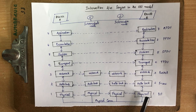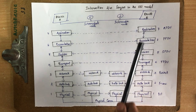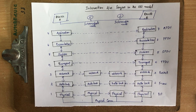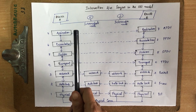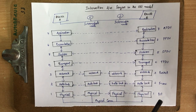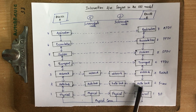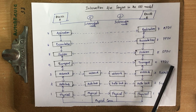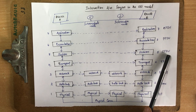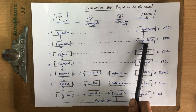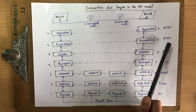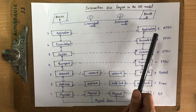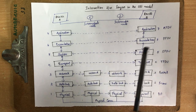At the destination node, the message passes through the physical and data link layers and reaches the application layer of device B. When data is in the physical layer it is called a bit; in the data link layer it is called a frame; in the network layer it is a packet; in the transport layer it is a transport packet data unit; in session it is a session PDU; in presentation it is a presentation PDU; and in application it is an application PDU.